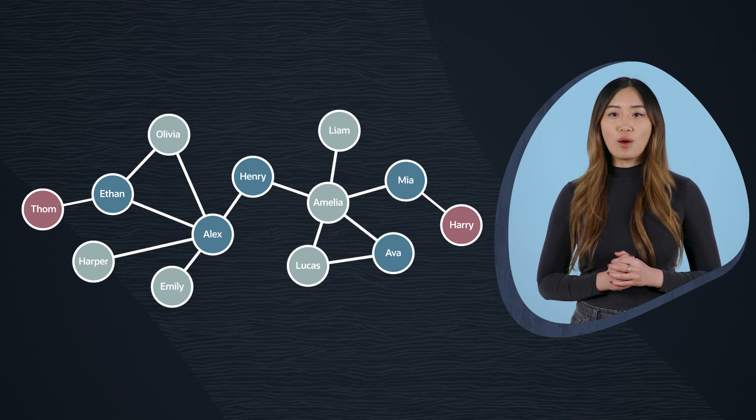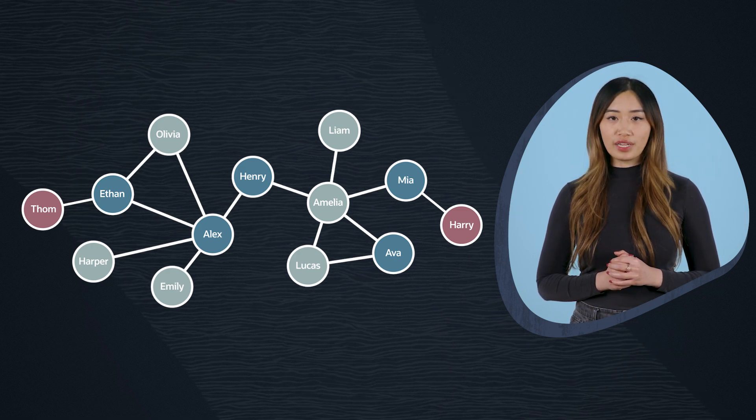Hence the name: Operational Property Graphs. Graph analytics is a native component of Oracle Database 23AI, so you can leverage this amazing feature to find connections and explore relationships in your data. Download Oracle Database 23AI and get started today.